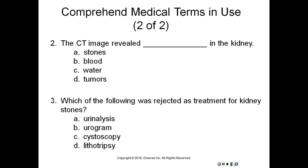Number two: the CT image revealed what in the kidney? There was a stone. A spiral CT scan was obtained, and mild nephrolithiasis was observed. So a stone or stones — letter A.